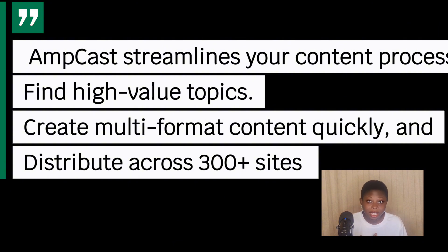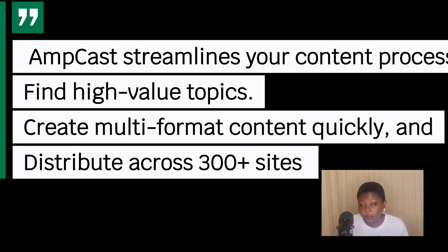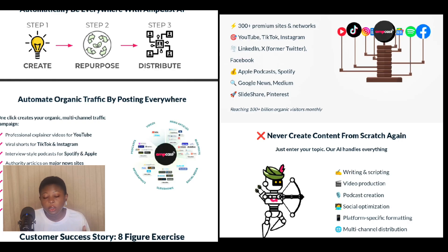To recap: AMCAS streamlines the content process — find high-value topics, create multiple-format content quickly, and distribute across hundreds of sites to scale organic reach for your brand. If you want to try out this workflow, go to the video description — I'm leaving links to the demo, the pricing, and Headline Peek. I'll also pin them in the comment section with every other material you'll need to jump into the demo and pricing section.